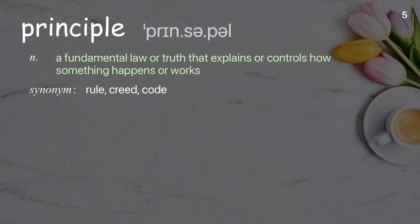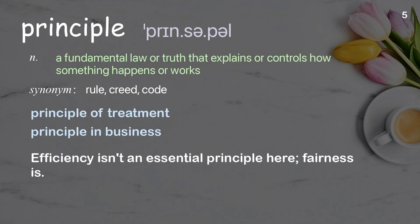Principle: a fundamental law or truth that explains or controls how something happens or works. Examples: principle of treatment, principle in business. Efficiency isn't an essential principle here — fairness is.